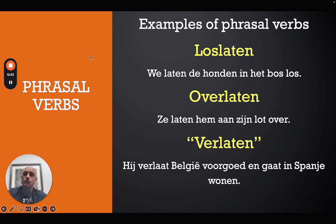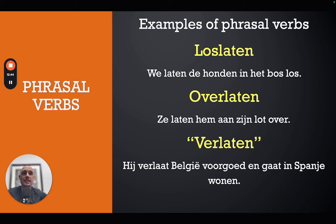'Overlaten' can be translated as 'to leave' or sometimes 'to abandon.' For example, 'ze laten hem aan zijn lot over' — 'they leave him to his own devices,' literally leaving him to his own destiny. Again, 'laten' is the main verb at the beginning, and 'over' — the preposition of the separable verb — goes to the end.